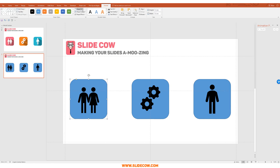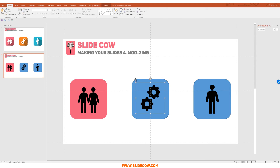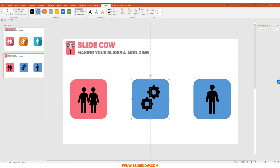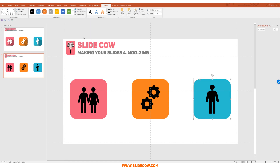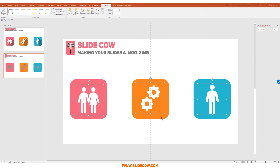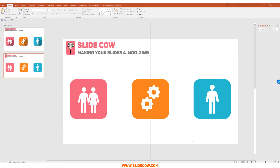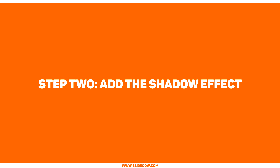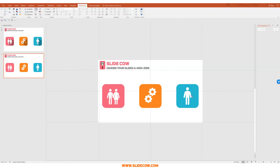Now I'm going to color them in. I'll make this one a pinkish color with no outline, this one an orange color without an outline, and this one a light bluish color without an outline. Then I'll make my icons white — click the icon, go to Format > Graphics Fill > White. That is step one completed.